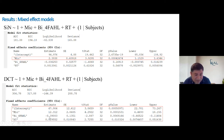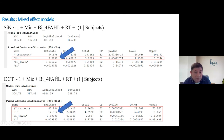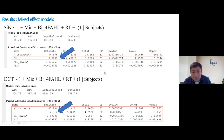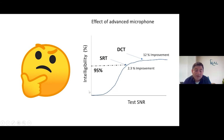The two models are significantly different from each other. The intelligibility model shows only an effect of the microphone, whereas the DCT model shows effects of a number of other things including reaction time — which is very interesting, though I won't focus on that today. What I am most interested in is the effect of the microphone: we see about a 2.3 percent improvement going from Pinna Omni to the more directional cardioid average, and about 12 percent improvement going from Pinna Omni to the beamformer — the more advanced processing strategy.